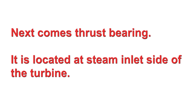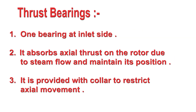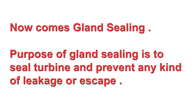Next comes the thrust bearing. It is located at the steam inlet side of the turbine. Thrust bearing characteristics: one, one bearing at the inlet side; two, it absorbs axial thrust on the rotor due to steam flow and maintains its position; three, it is provided with a collar to restrict axial movement.